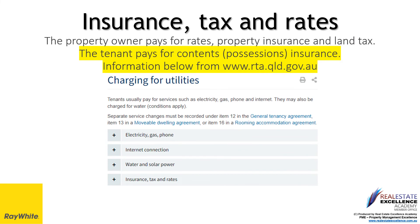During your tenancy agreement, it is your responsibility to pay for your own contents and possessions insurance. Refer to the terms of the agreement in relation to electricity, gas, phone, internet, water, or solar power to be sure you are aware of all your responsibilities and requirements for connections of such services. The property owner pays for rates, property insurance, and land tax. Our agency strongly recommends that you ensure you have contents and possessions insurance.